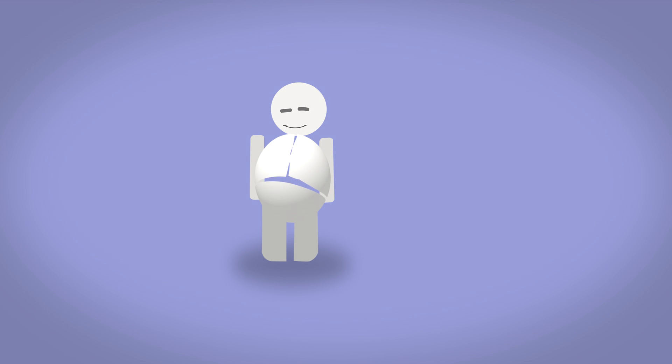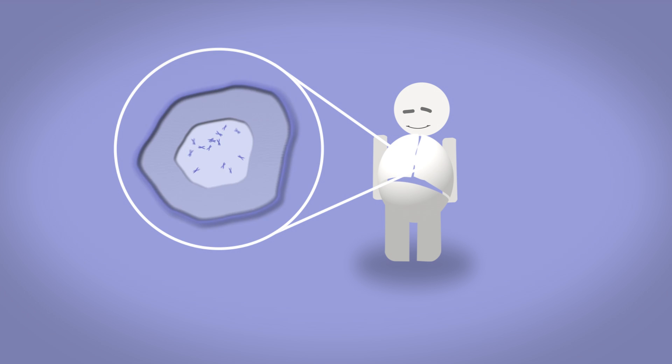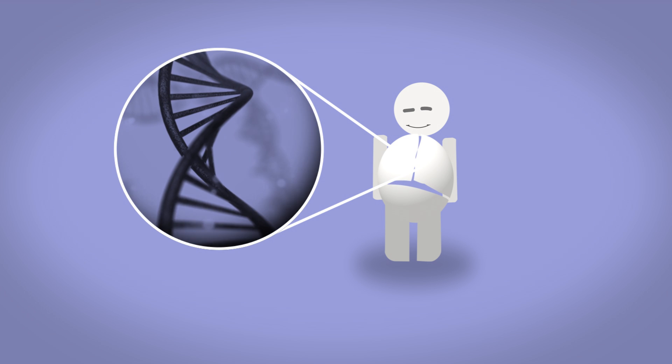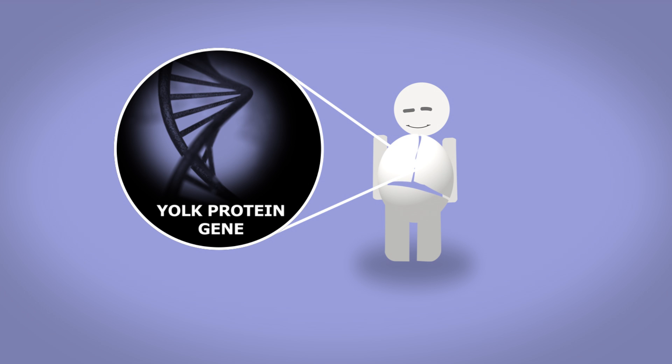There are many other features of the human genome that point to common ancestry. Humans still have a remnant of the gene required for producing the protein found in the yolk of bird and reptile eggs.